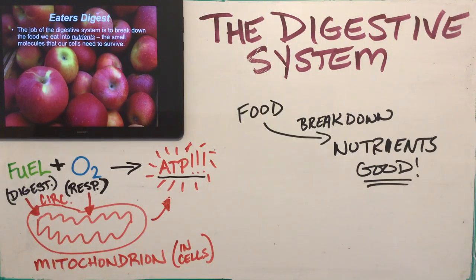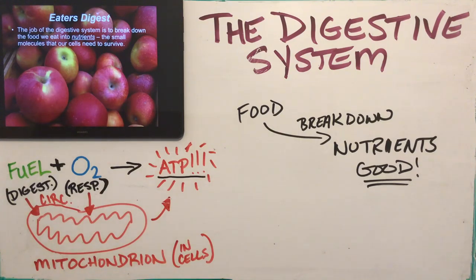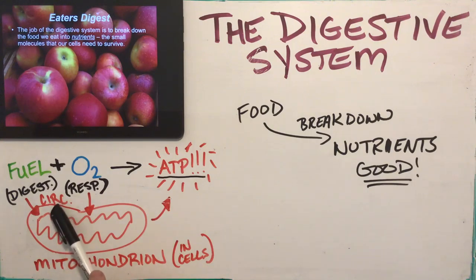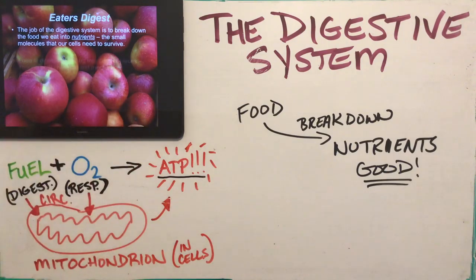The digestive system breaks food down into a small enough size so that nutrients can enter the bloodstream and then enter our cells. Think about an apple — it's much larger than our cells. We have to break down that food into small molecules called nutrients that can be put into the blood, circulate, reach all the cells in the body, interact with the mitochondria, and help make energy.